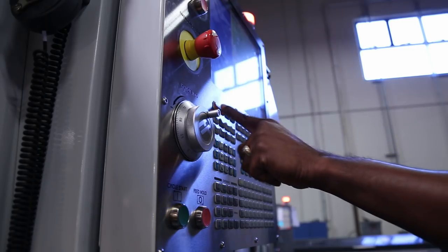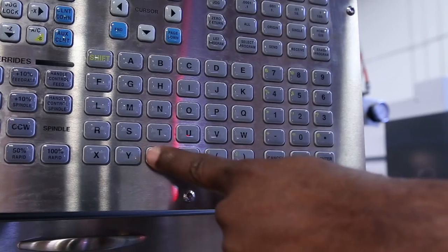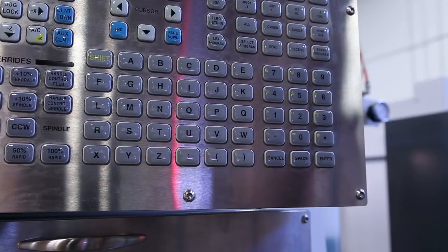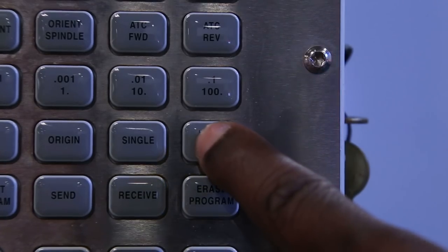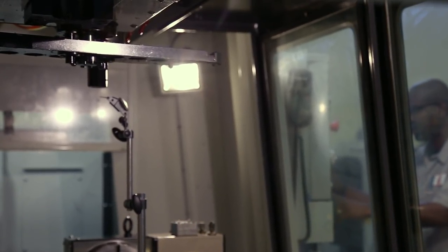Release the e-stop and press reset a couple times to clear the alarm. Zero return only the Z axis, then press Z home G28. The Z axis will now move to the tool change height.